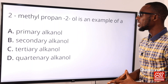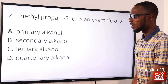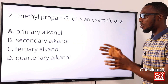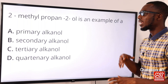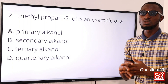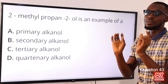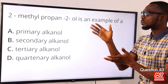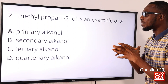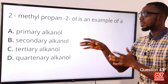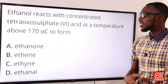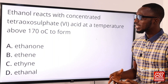Question 43: 2-methylpropan-2-ol is an example of a tertiary alkanol. If it were 2-methylpropan-1-ol, that would be a primary alkanol. A primary alkanol has just one alkyl group attached to the carbon atom carrying the hydroxyl group. 2-methylpropan-2-ol is a very good example of a tertiary alkanol, so option C is the correct option.